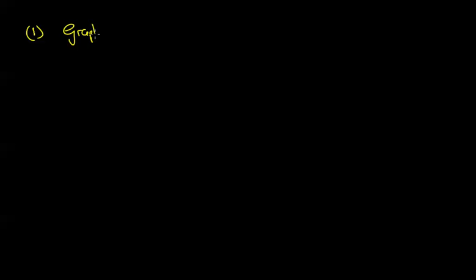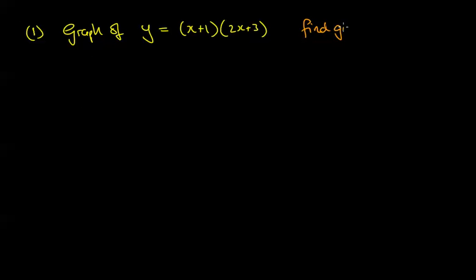Let's take the graph of y equals (x+1)(2x+3). On this graph, find the gradient at the coordinate (2, 21). This point belongs to the graph, so the graph goes through that coordinate.